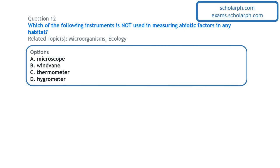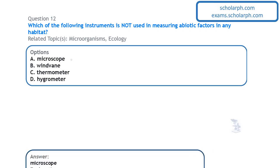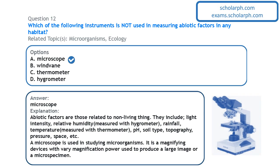Next question on microorganisms and ecology: which instrument is not used in measuring abiotic factors in a habitat? The hygrometer is used to measure relative humidity, the thermometer measures temperature, and the wind vane measures wind direction. However, the microscope is not used to measure abiotic factors — it is used to study living organisms (microorganisms). So the microscope is associated with biotic, not abiotic, factors.